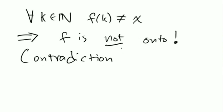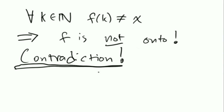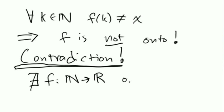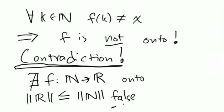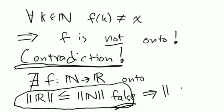Going back to my assumption, I assumed there exists an f which is onto — but we just showed f is not onto because it misses x. This is a contradiction. Whenever you reach a contradiction it means you assumed something wrong. The conclusion is that there does not exist a function mapping the natural numbers to the real numbers that is onto. This is the negation of R being less than or equal to N in size. In other words, the natural numbers are strictly smaller in size than the real numbers. QED.